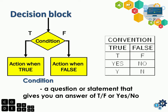For the true or false exits, they can connect to any symbol — a process block, input-output block, or terminal block. The conventions or answers given under conditions are: true or false, T or F (same as true or false), yes or no, and Y or N (same as yes or no).